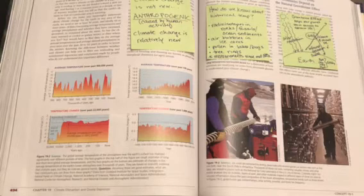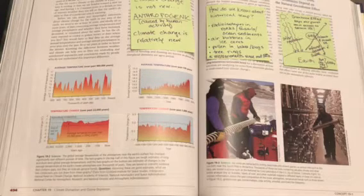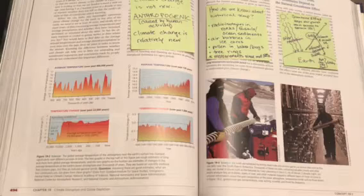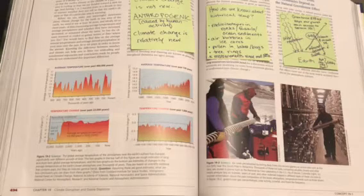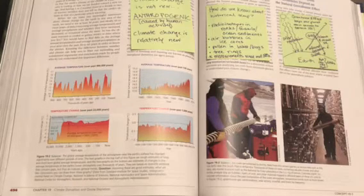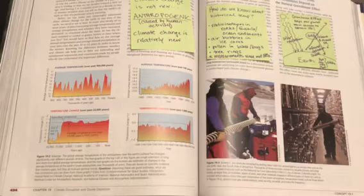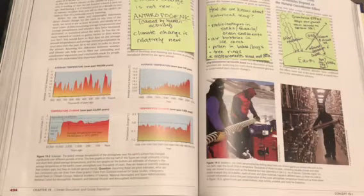Also from studying radioisotopes and rocks and fossils, ocean sediment, can look at pollen that's collected in the bottoms of lakes and in bogs, looking at tree rings, and then since the mid-1800s we have actual measurements made with instruments like thermometers.